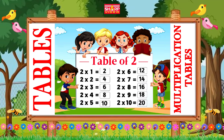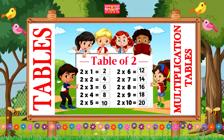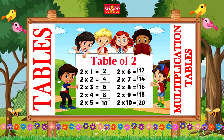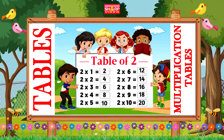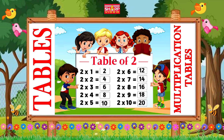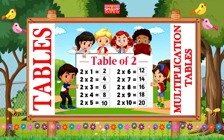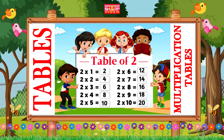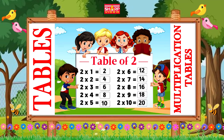Two fives are ten, two sixes are twelve, two sevens are fourteen, two eights are sixteen, two nines are eighteen.